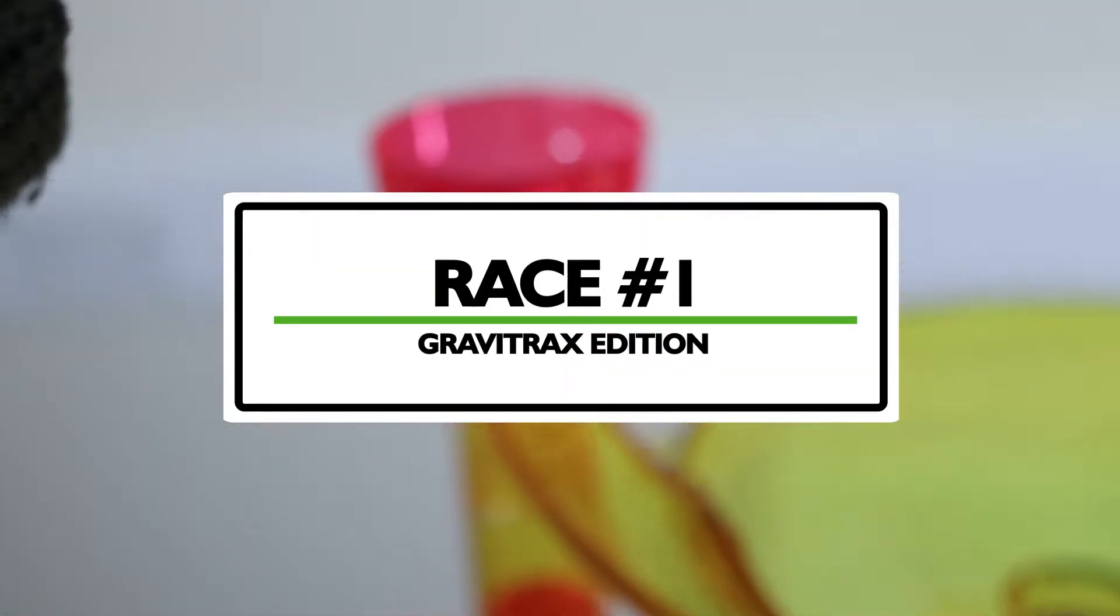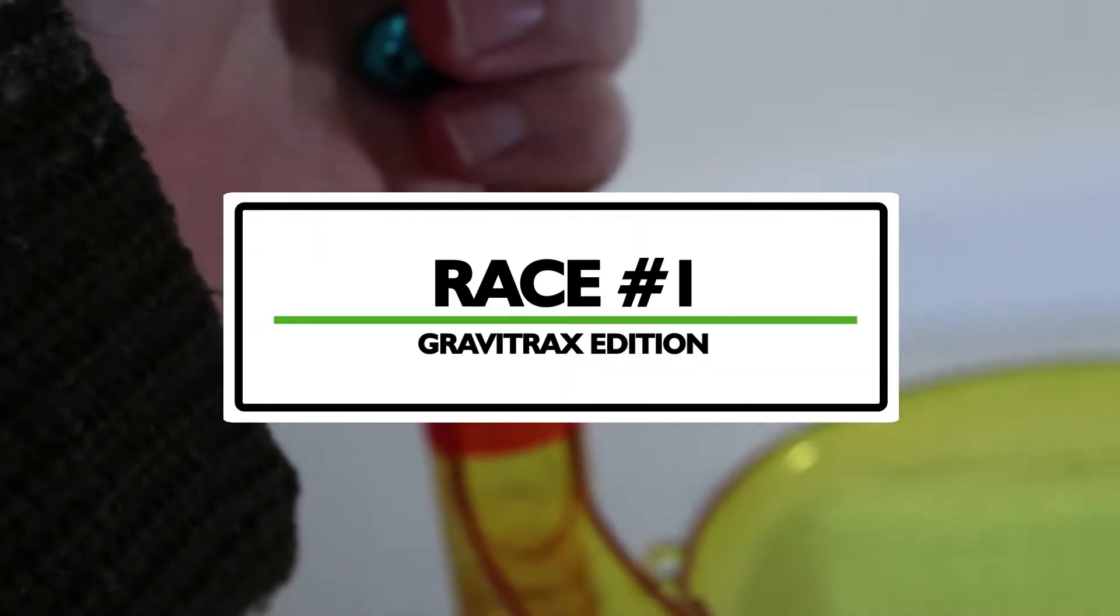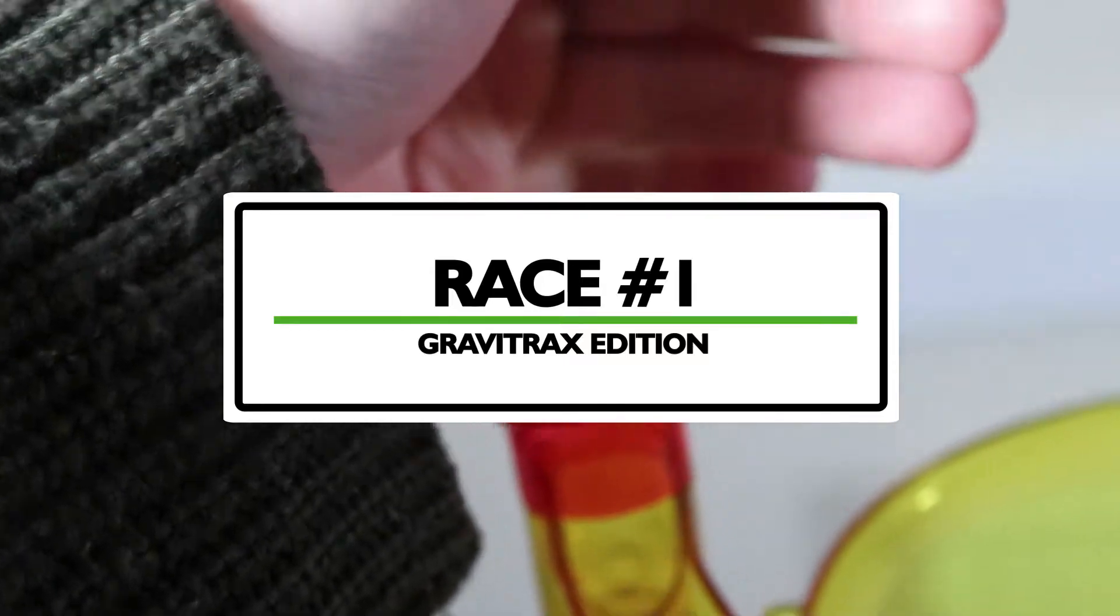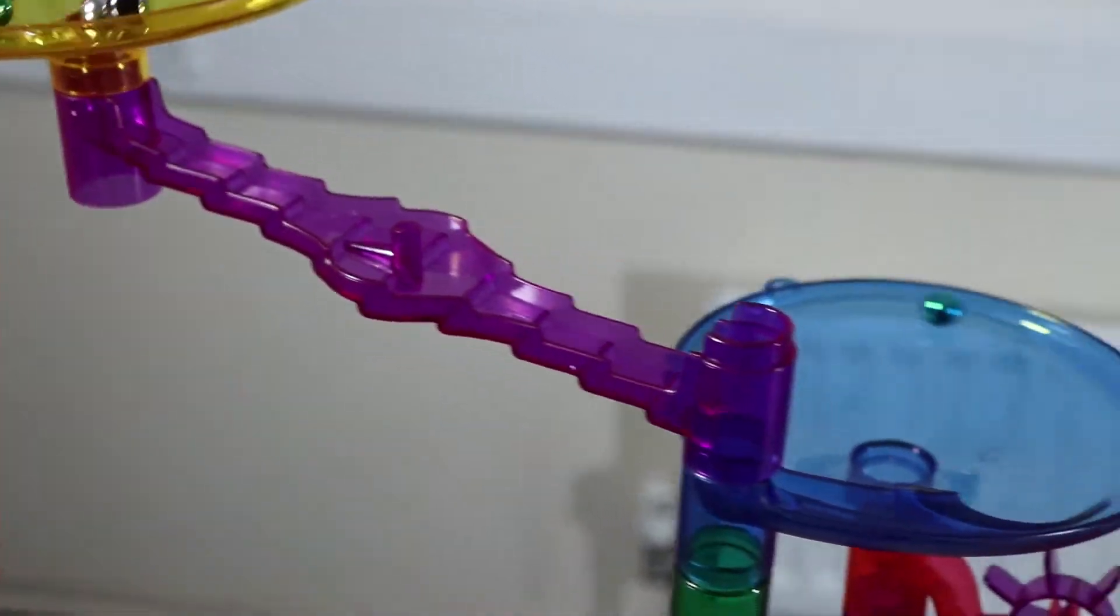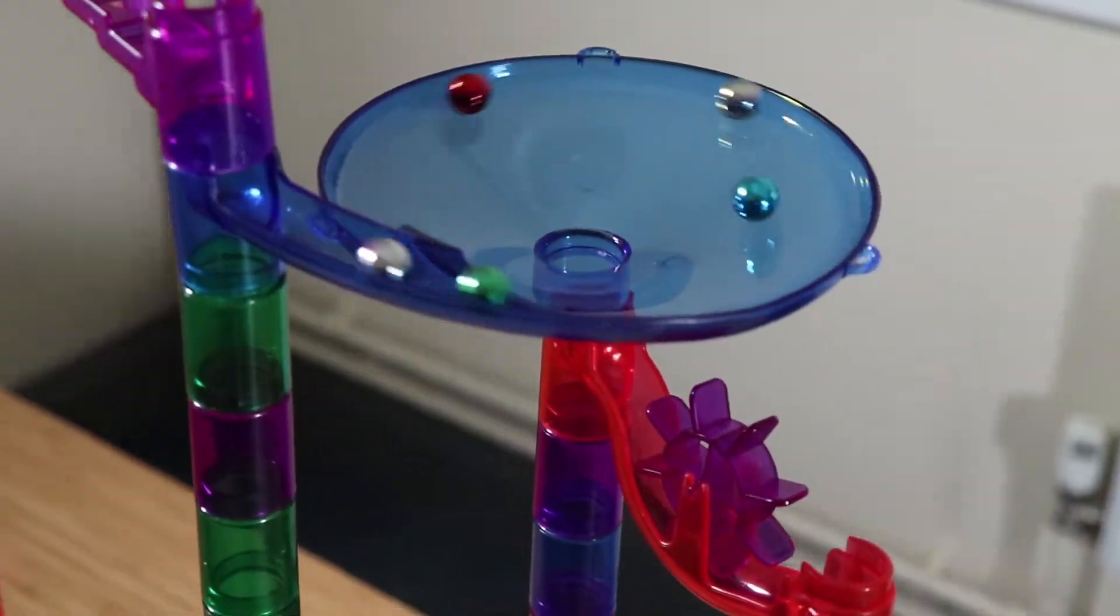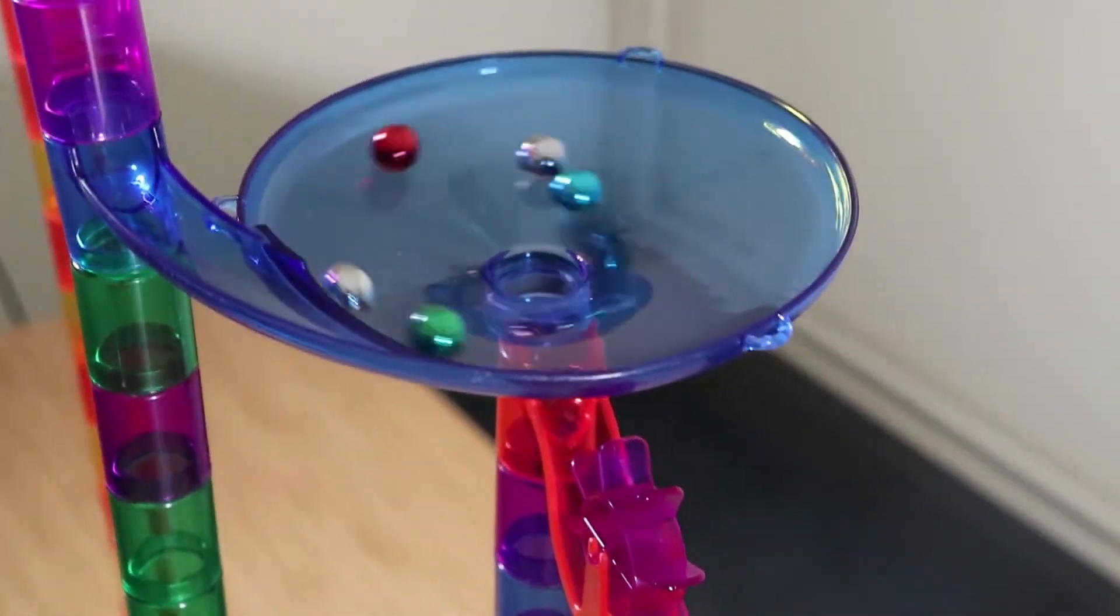So here we go going into race one of our first elimination match and in we go. The marbles drop in so it looked like the blue marble got the first early lead and gets an amazing start. Drops down the hole instantly followed by all the rest. The marbles having a great first vortex.